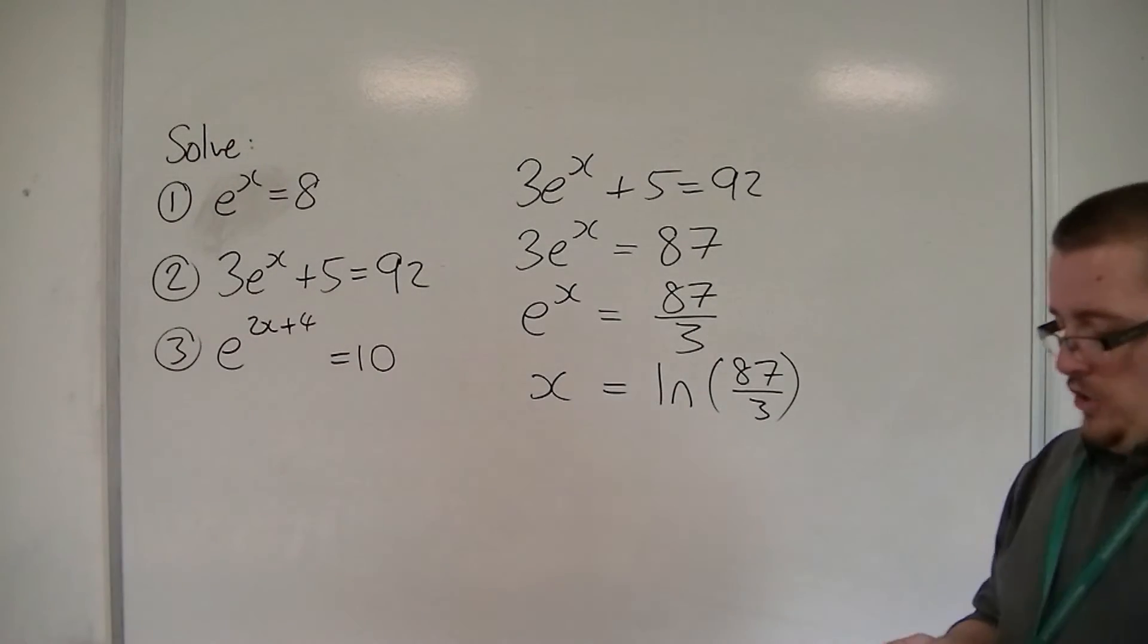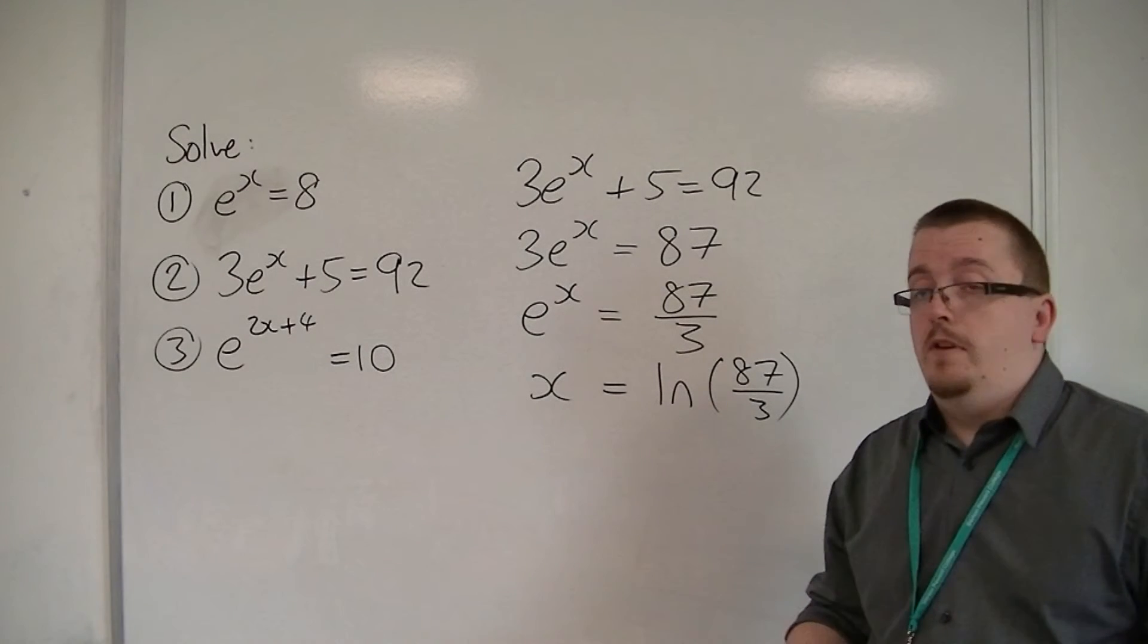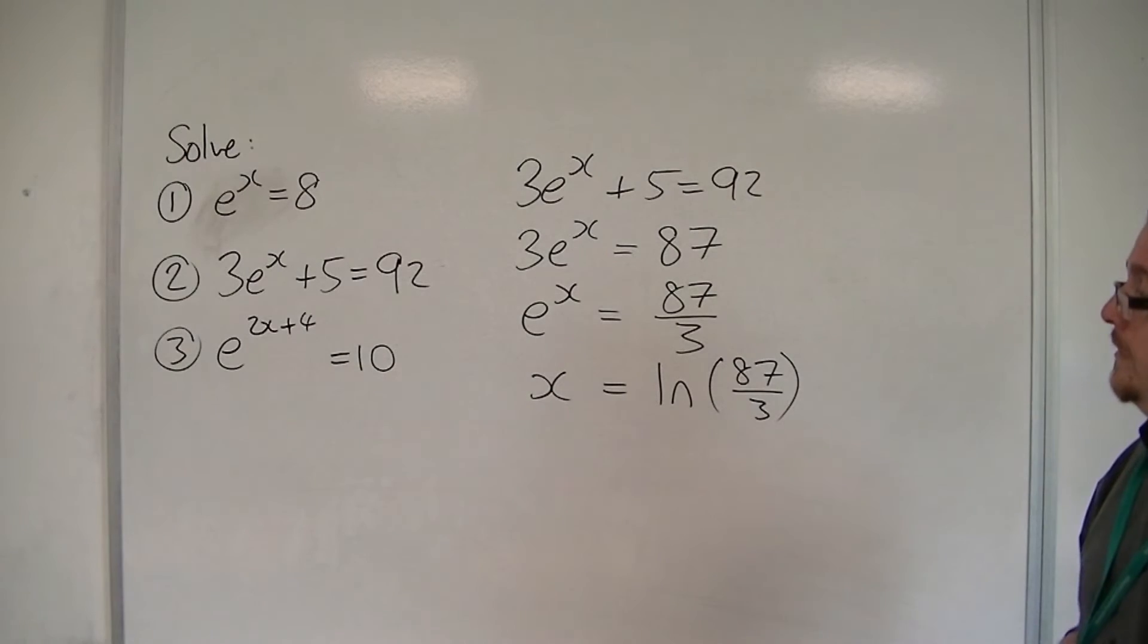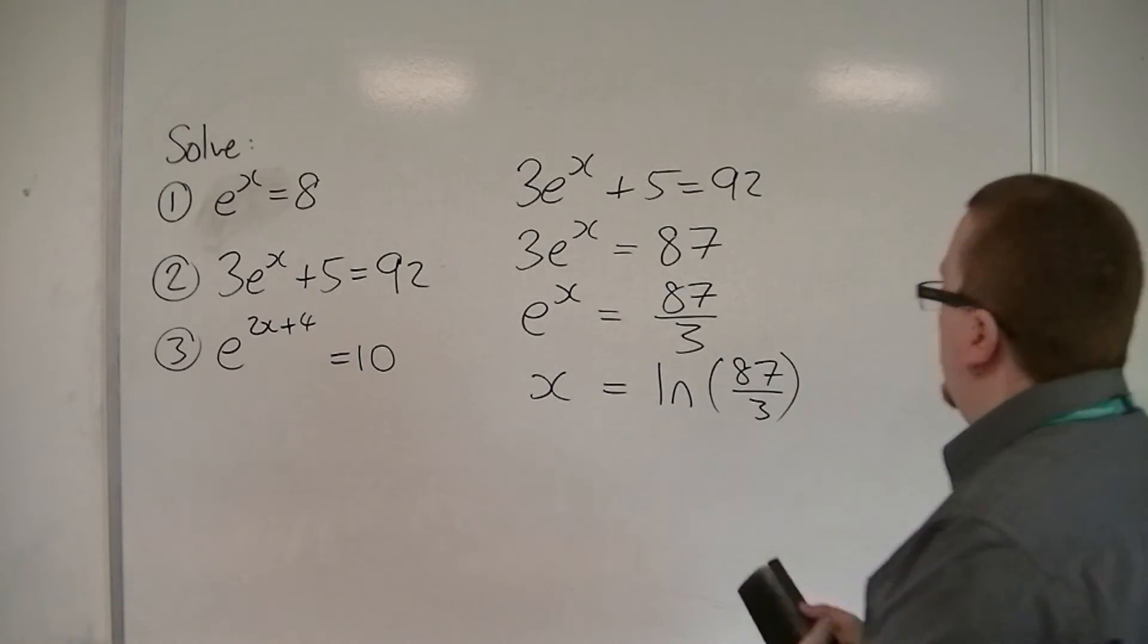The decimal approximation to it, log of 87 over 3, is 3.367 to 3 decimal places. So that would be your answer there. But we're going to go with the exact answer.